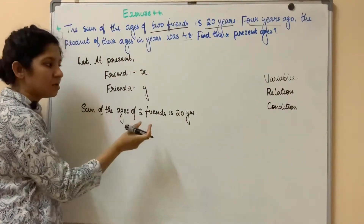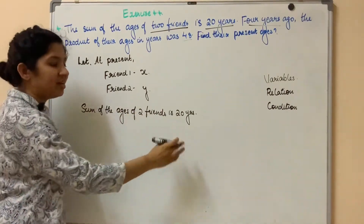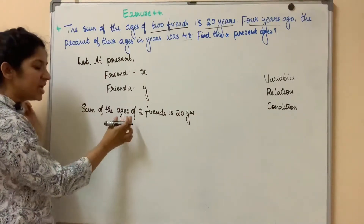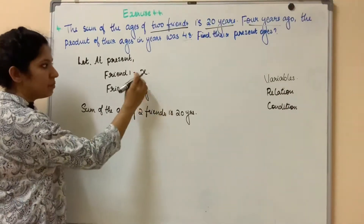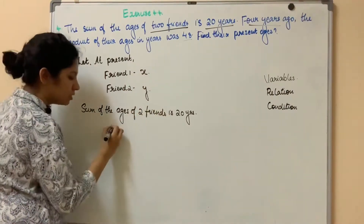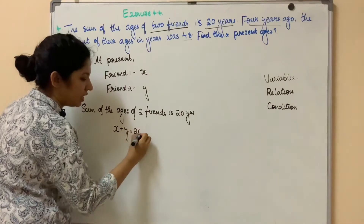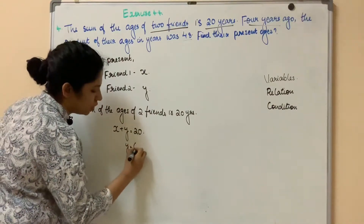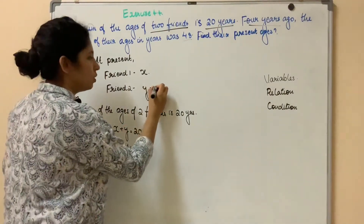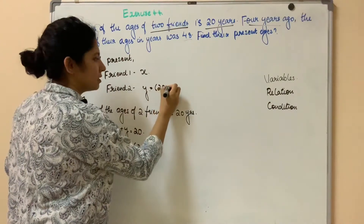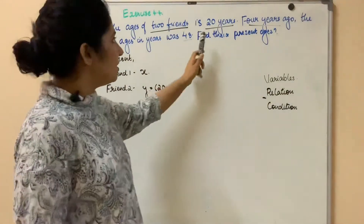These two friends' ages will be added together. The sum of the ages: Friend 1 plus Friend 2 equals 20 years. So x plus y equals 20. Therefore, y equals 20 minus x. Now let's complete the next step — forming the quadratic equation condition.